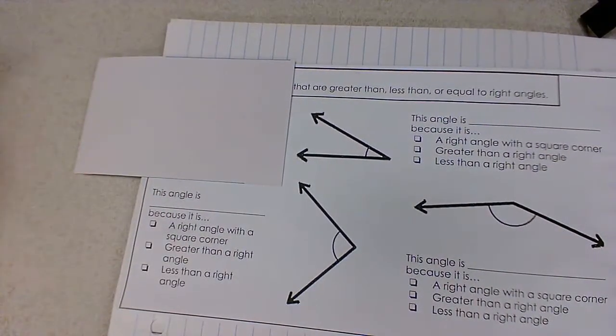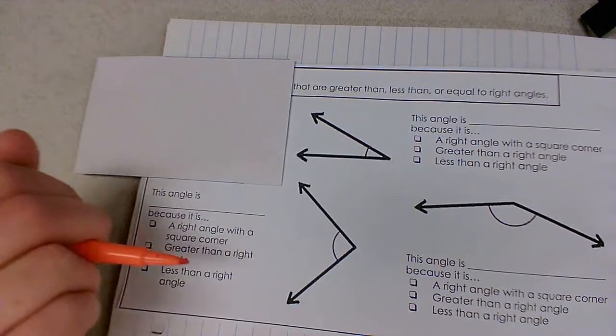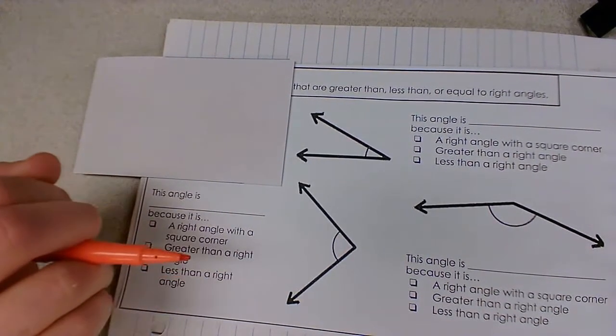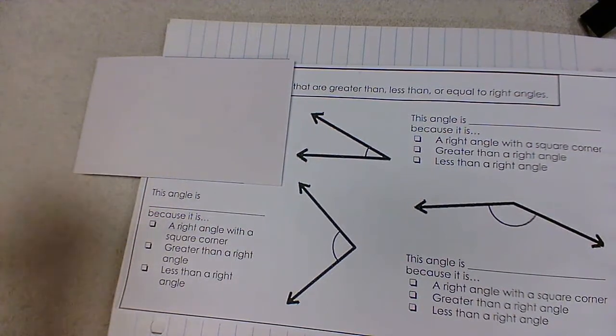If we can line up our square corner to an angle and it lines up perfectly, we know that that's a right angle. If the angle is smaller than a square corner, it's acute, and if it's larger than a square corner, it would be obtuse.